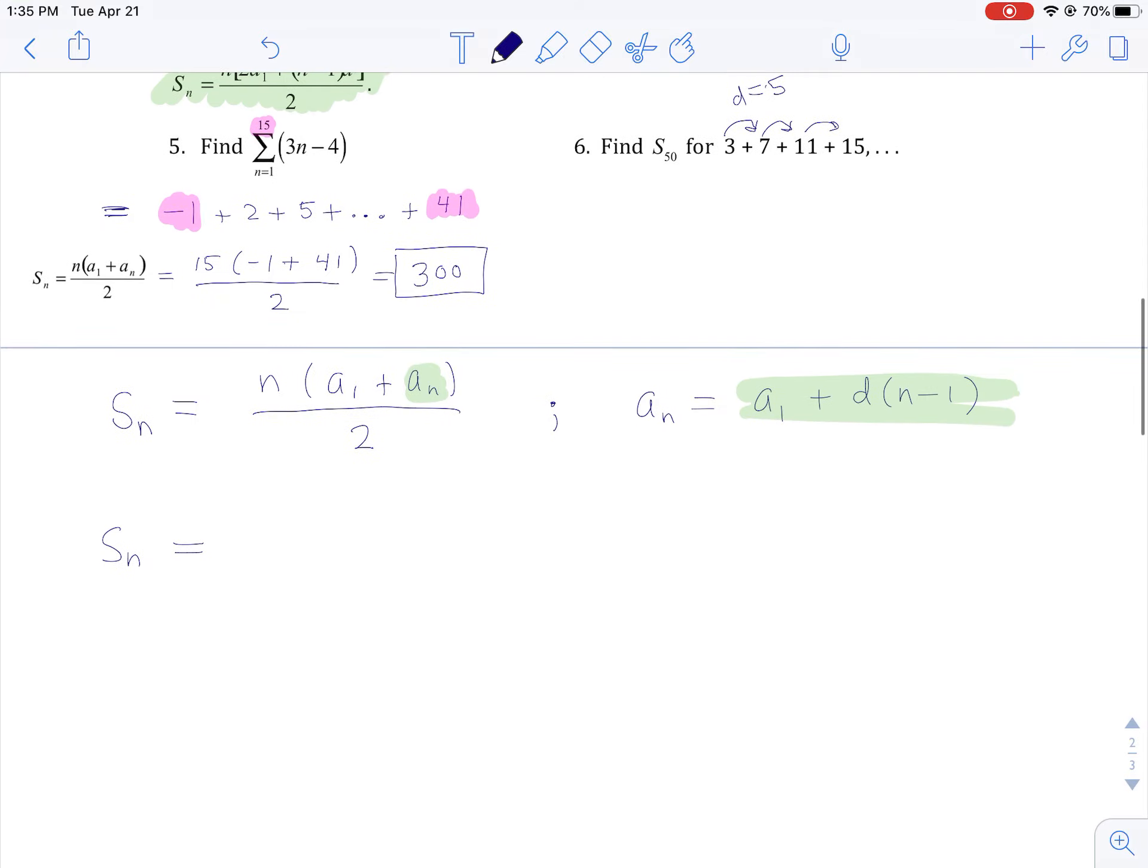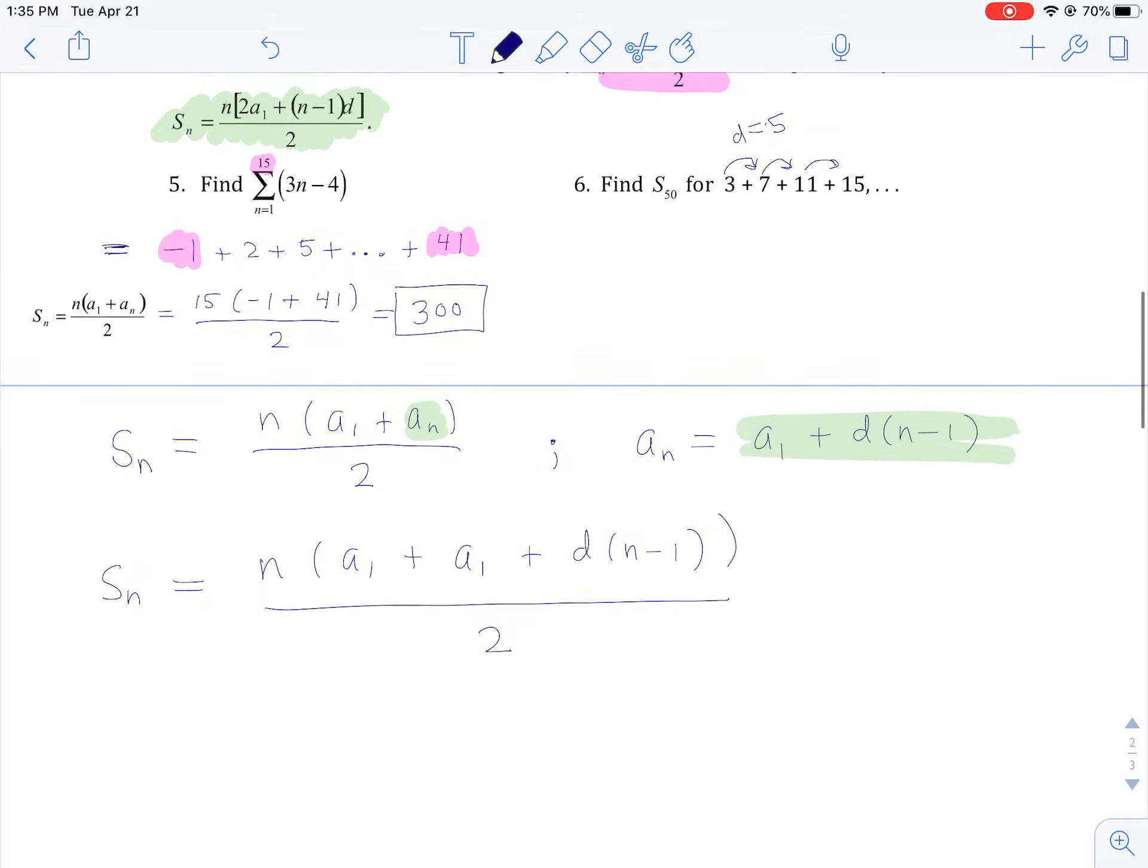So if we do that, the nth partial sum or the sum of an arithmetic series, we'll just rewrite this and do a little algebra. In place of a sub n, I'm going to rewrite a sub 1 plus the common difference times n minus 1. And don't forget, that's over 2.